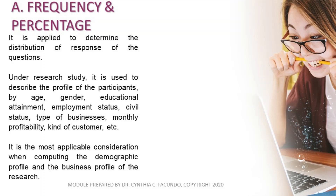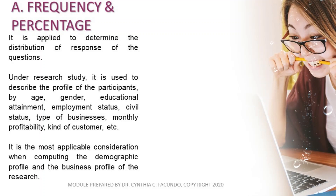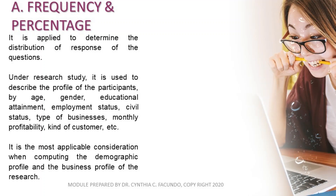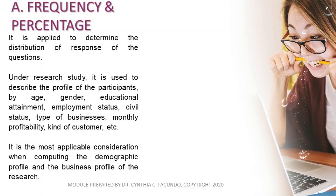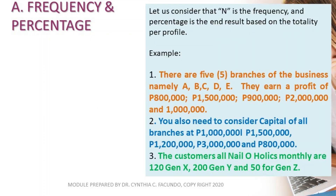Frequency and percentage is applied to determine the distribution of responses to questions. Under a research study, it is used to describe the profile of the participant by age, gender, educational attainment, employment status, civil status, type of businesses, monthly profitability, kind of customer, etc. It is the most applicable consideration when computing the demographic profile and the business profile of the research. Note that N is the frequency, and percentage is the end result based on the totality per profile. I will give you three samples and we will discuss them one by one.